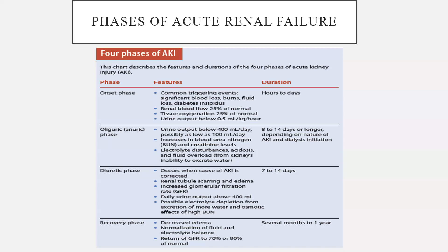The second phase is the oliguric or anuric phase, wherein urine output will be below 400 ml per day, possibly as low as 100 ml per day. There is an increase in BUN and creatinine levels, electrolyte disturbances, acidosis, and fluid overload from the kidneys' inability to excrete water. This phase can last for 8 to 14 days or longer depending on the nature of the renal failure and dialysis initiation.